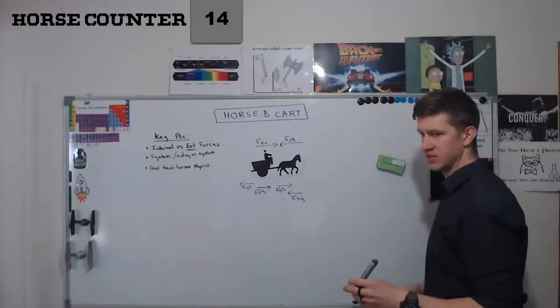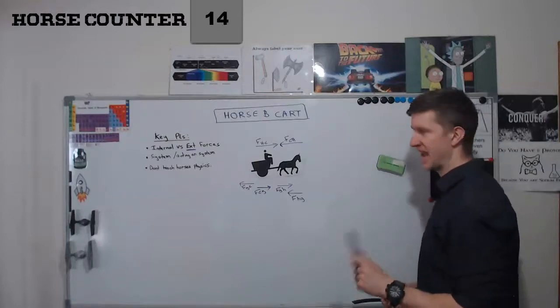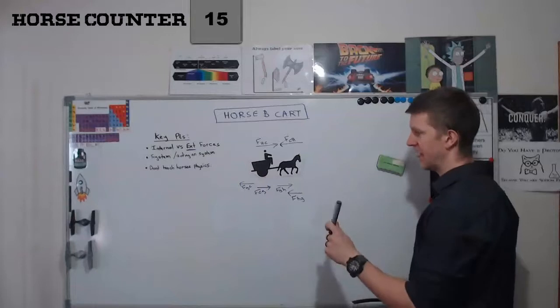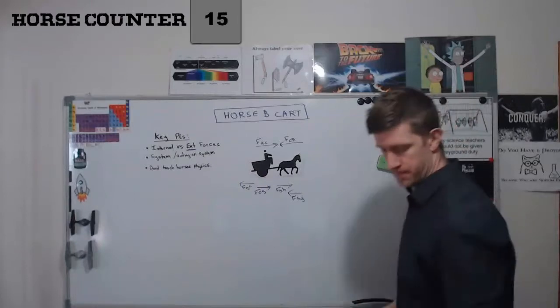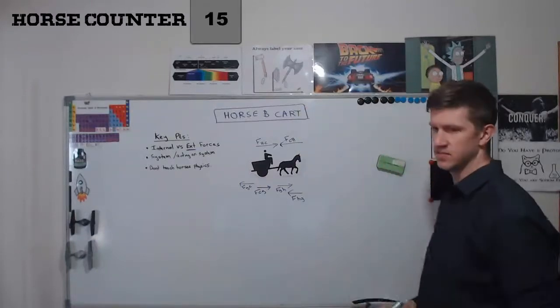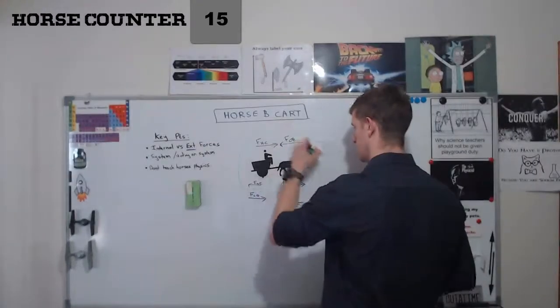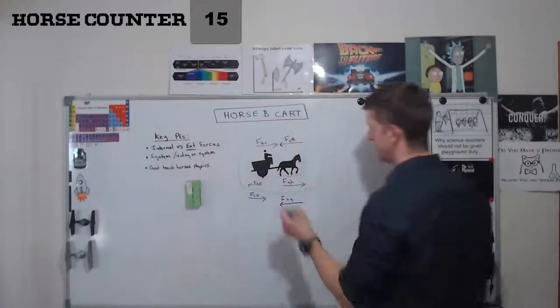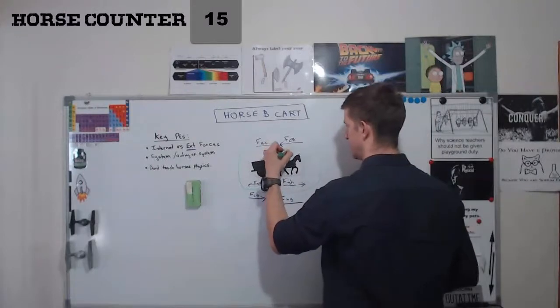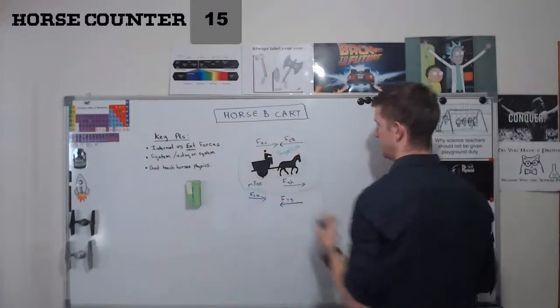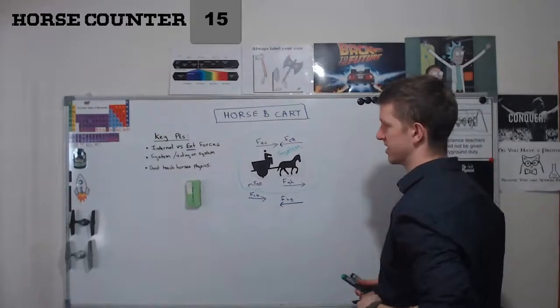So if I was to break it into the pieces that actually act on the horse and the cart and the ground, my system would look like this. So everything in this becomes my system. This is what's happening in the horse and cart's world.